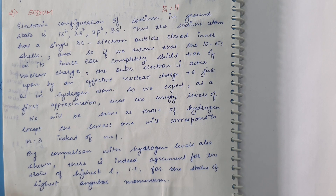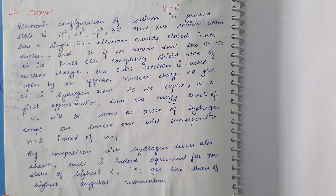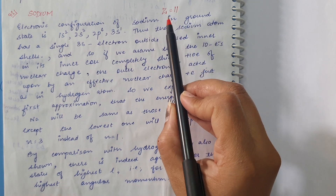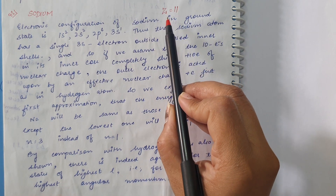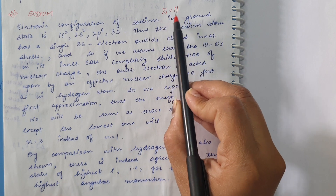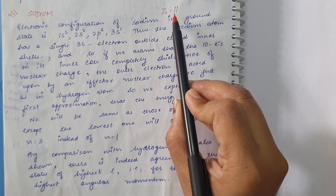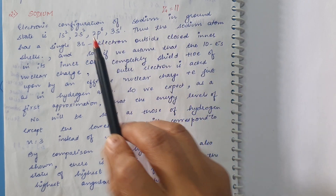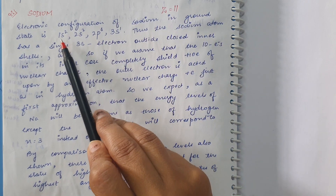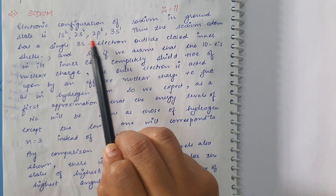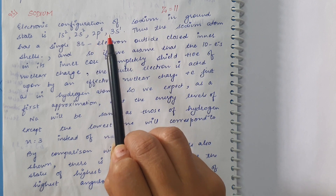Hello students, in this lecture we will discuss the atomic spectra of sodium atom. The atomic number of sodium atom is Z = 11, and for atomic number 11, the electronic configuration will be 1s², 2s², 2p⁶, 3s¹.